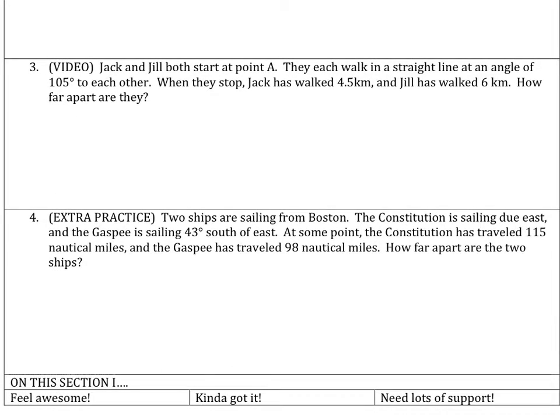For problem three, I've got Jack and Jill both starting at point A. They walk in a straight line at an angle of 105, so they're going like this. This might be Jack, and this might be Jill. And what we notice here is that we kind of have a triangle when we're trying to figure out how far Jack and Jill are apart. So Jack has walked 4.5 kilometers, and Jill has walked 6 kilometers.